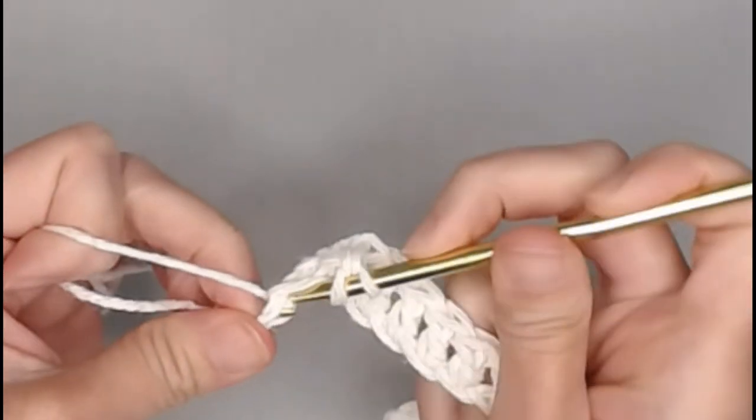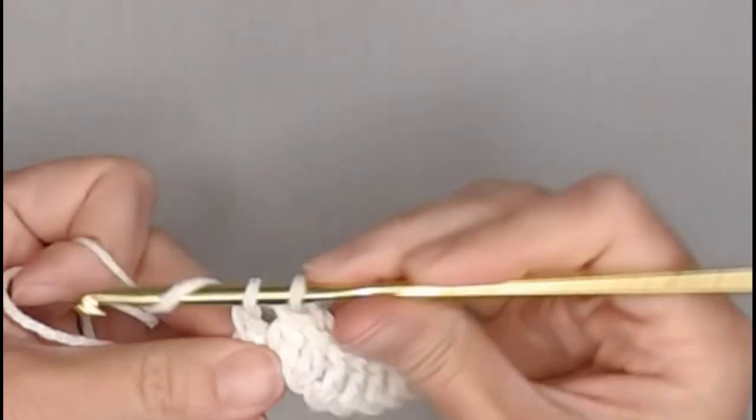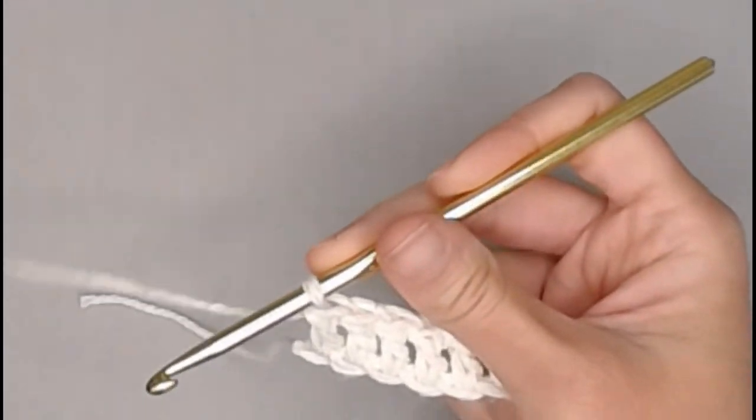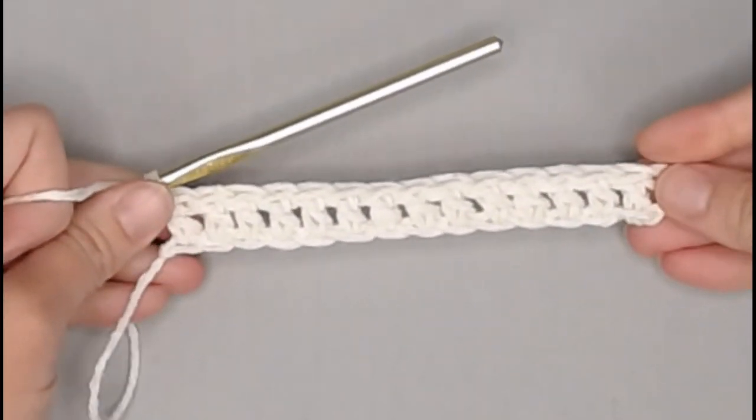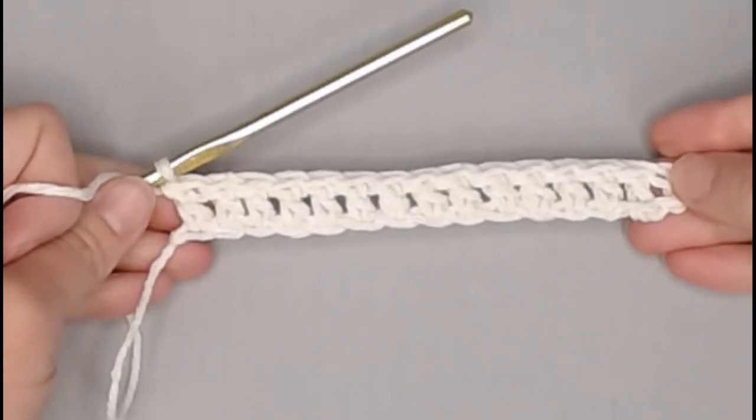Last double crochet stitch. Perfect! Great! We have just finished row one and this is what it'll look like. Just a bunch of double crochet stitches.